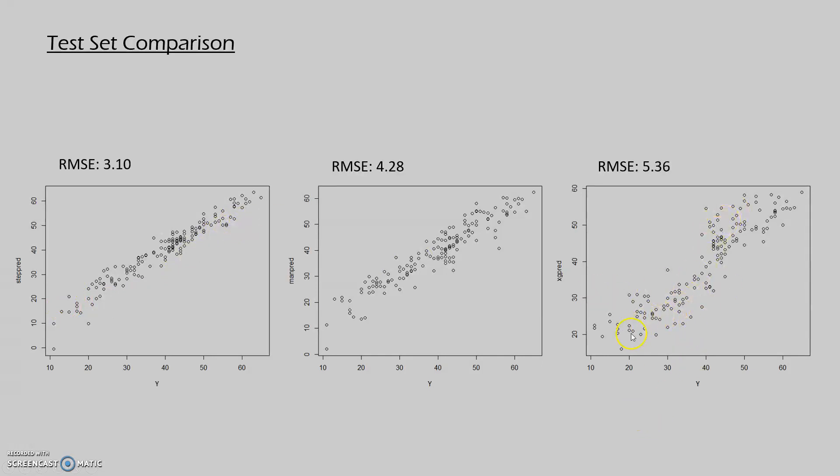So it looks like the stepwise model still generalized better than either of the other ones. I'm a bit surprised about the random forest model performing so poorly. I thought that—I didn't get to tune it and I had to train it on a slightly smaller data set for it to be applicable. But it's interesting to see that the RMSE here, the root mean square error, is the lowest for the stepwise regression.